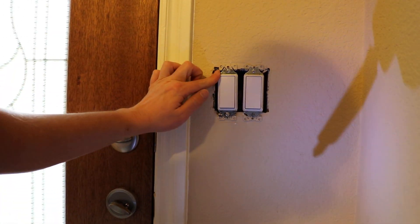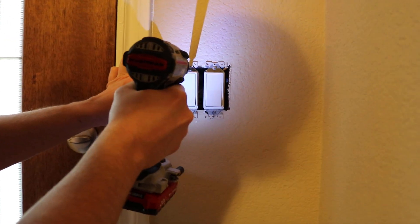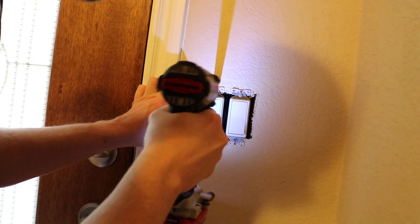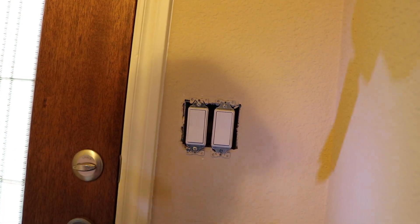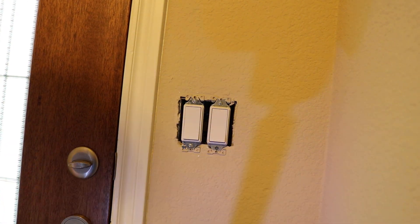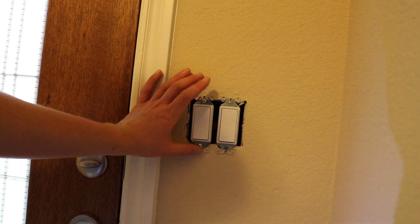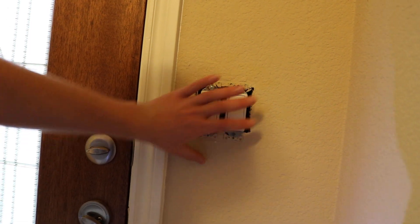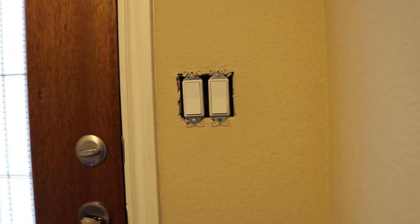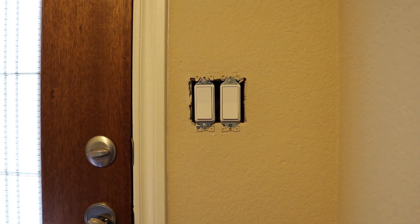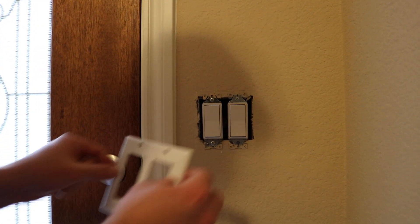So that looks pretty good. It's real important that you get those devices centered up. It will make putting the plate on a lot easier. You'll have a lot better chance of getting a level plate on the first shot, assuming that your mounting box is square. That's really the trick to putting the cover plate on with ease and not having any problems.